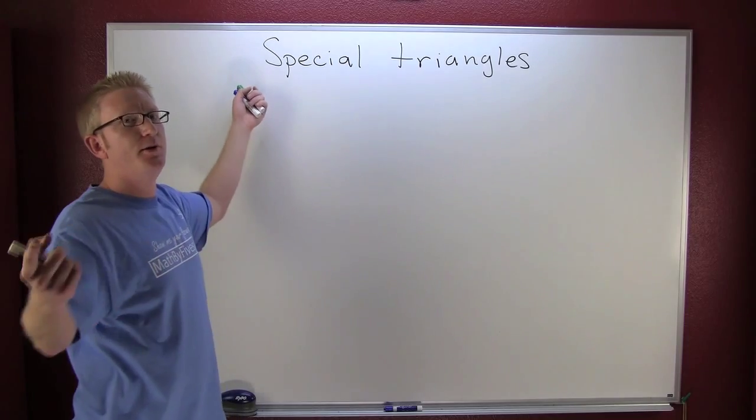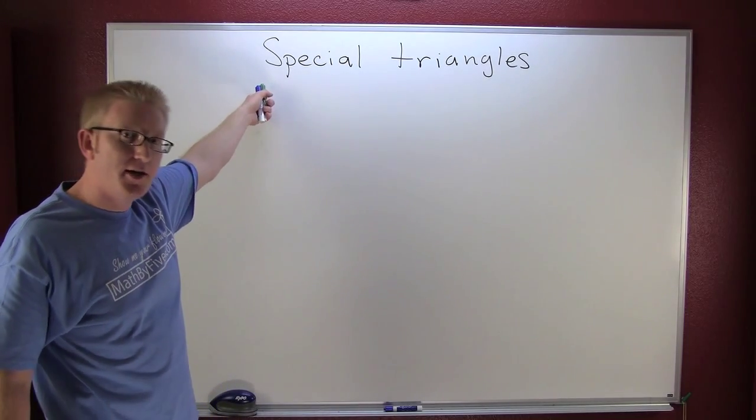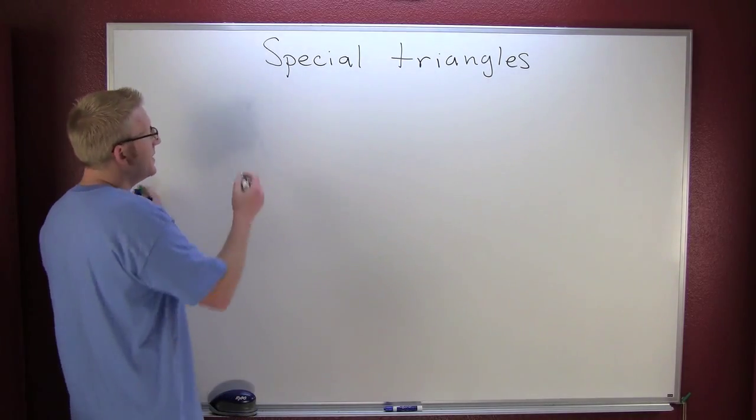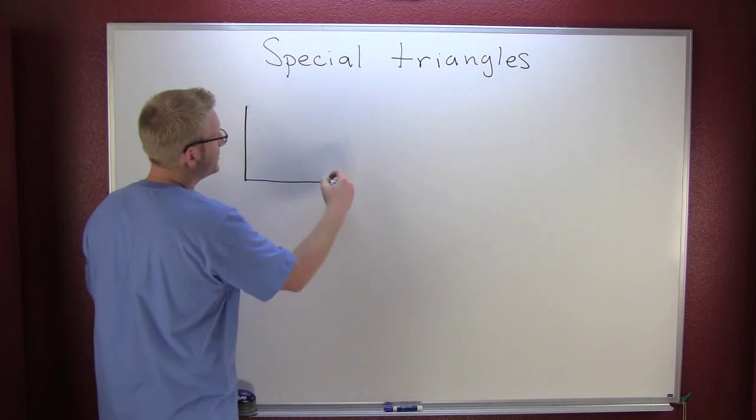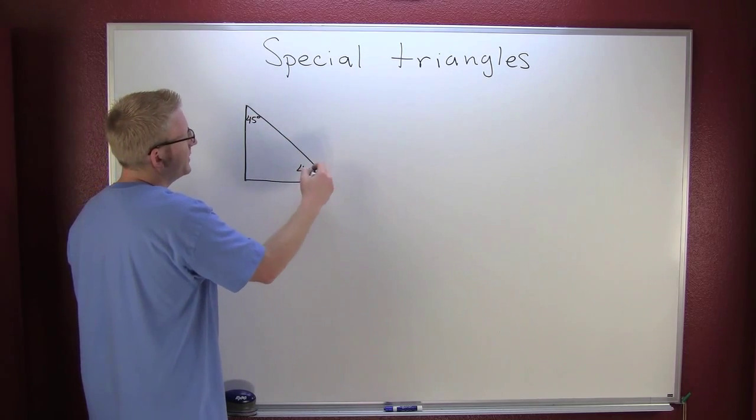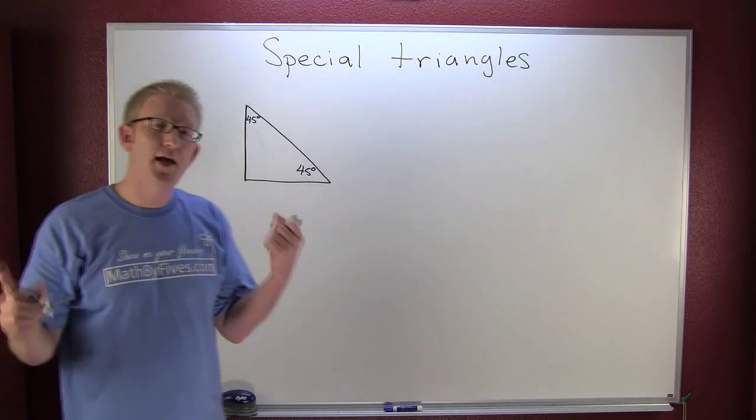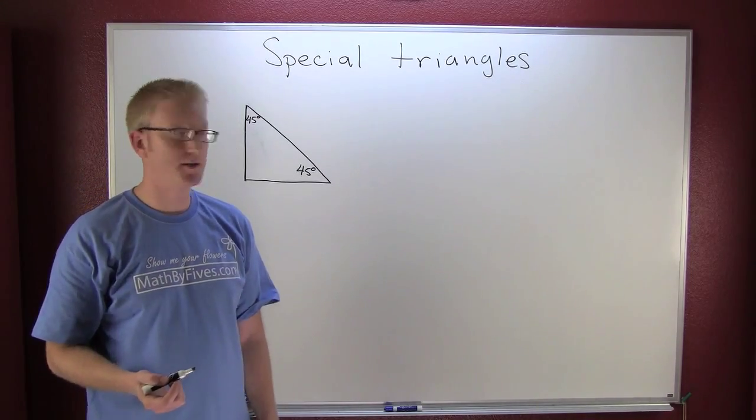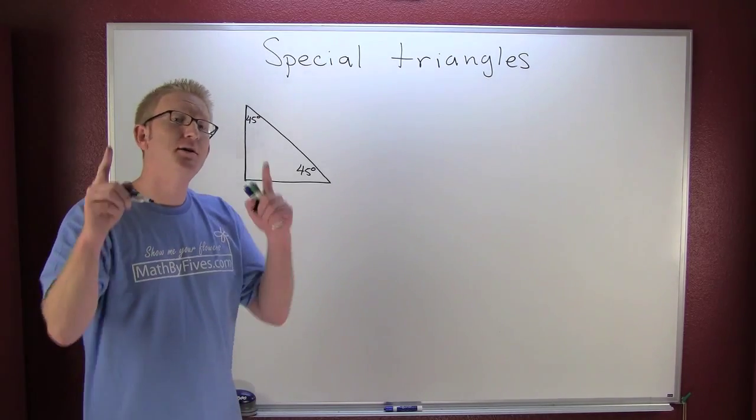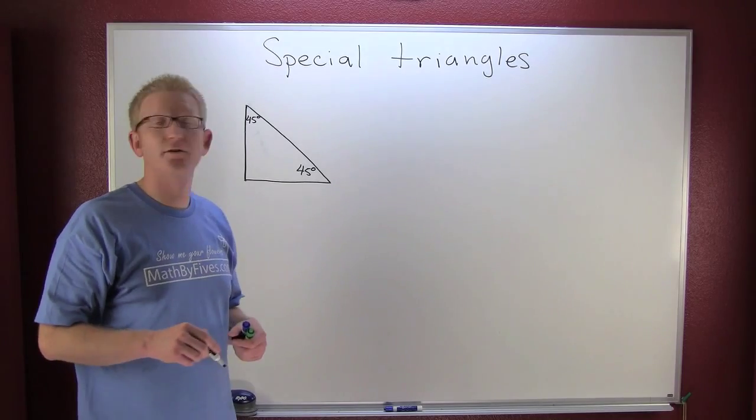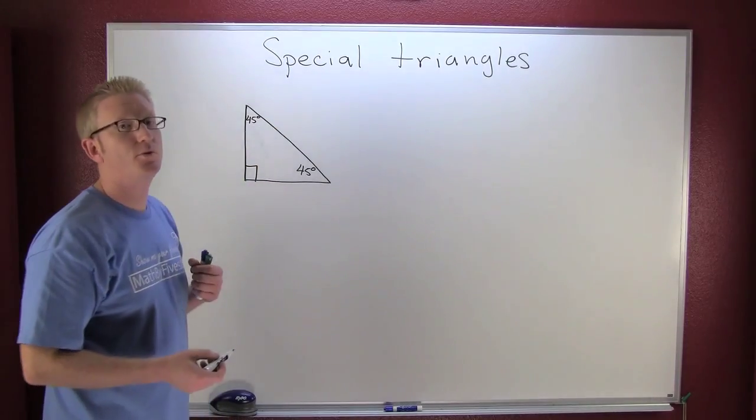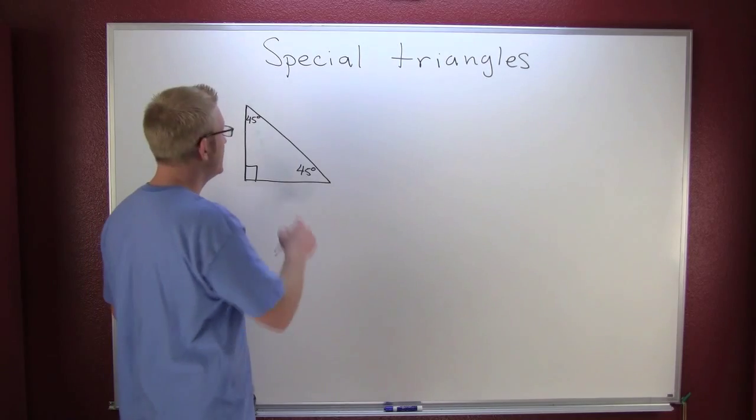Special triangles - we've just gotten off the 30-60-90 triangle. Now what I want to do is entertain the 45-45-90 triangle. In order to do that I need to draw a triangle that has two 45 degree angles. Because the angles are the same this triangle is going to be isosceles, meaning the two legs are going to be the same length. But we have the interior angles of a triangle have to add to be 180, this being said that's 90 degrees or a right triangle.